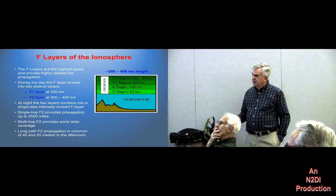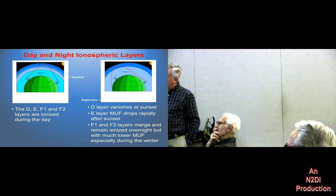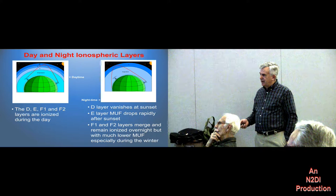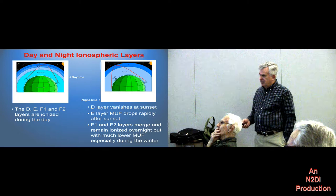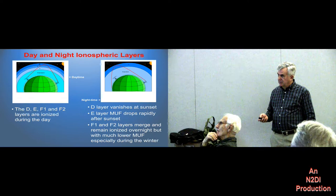During the daytime, the D, E, F1, and F2 layers are ionized. At night, right at sunset, the D layer vanishes, which allows 80 and 160 meters to open. Then the E layer maximum usable frequency drops rapidly after sunset, which also helps 160 and 80 meters and eliminates short-distance propagation from New Jersey to Washington DC at about sunset. MUF stands for maximum usable frequency.